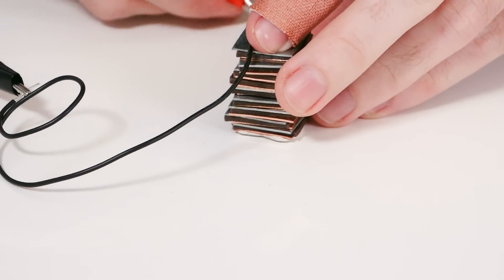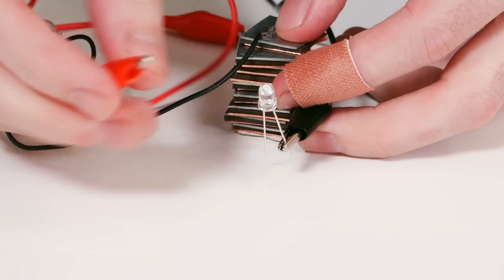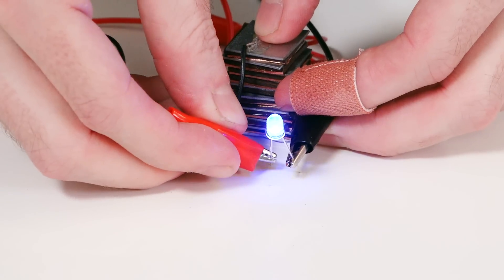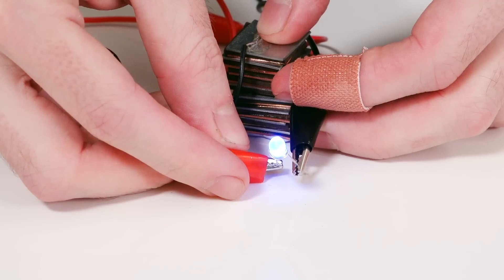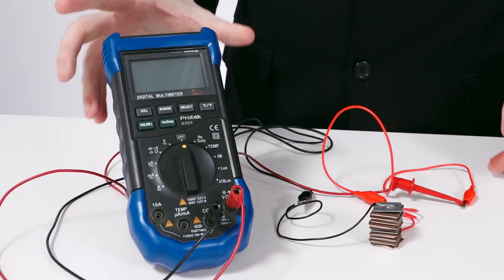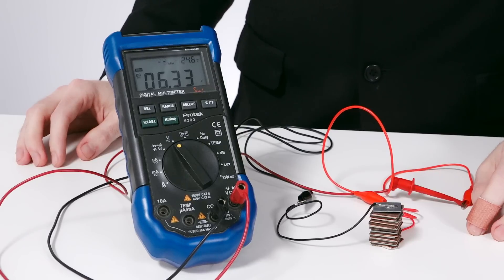It's not sturdy by any means, but this leaning tower of Volta produces enough power to light a 5mm blue LED. And for the record, that is 9 cells in the pile, producing 6.33 volts.